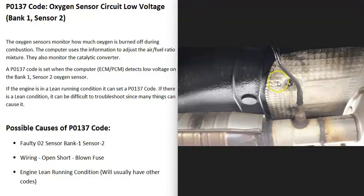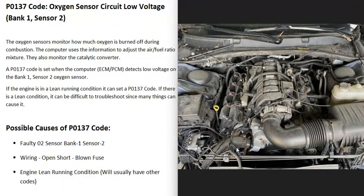Keep in mind that these can be on a fuse and sometimes a relay. The last thing on the list is that there's a lean running condition with the engine. This basically means there's more air going into the engine than gas, although usually if this happens you're going to get other codes.